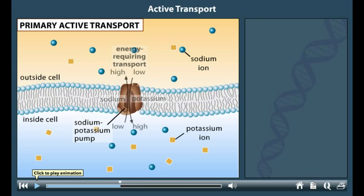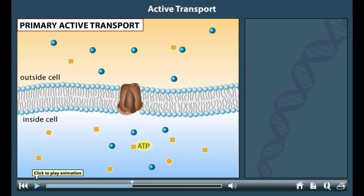The ions are actively pumped against their concentration gradients. Primary active transport involves the direct hydrolysis of ATP, which provides the energy required for transport.